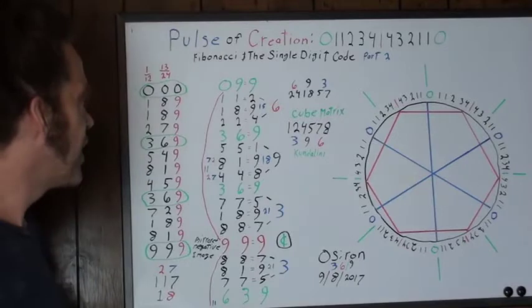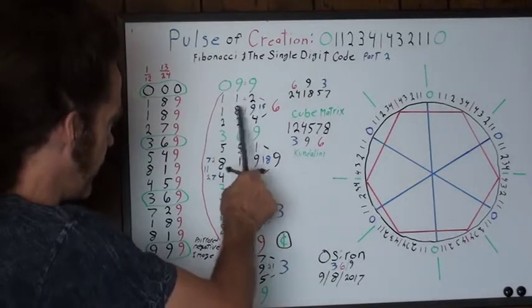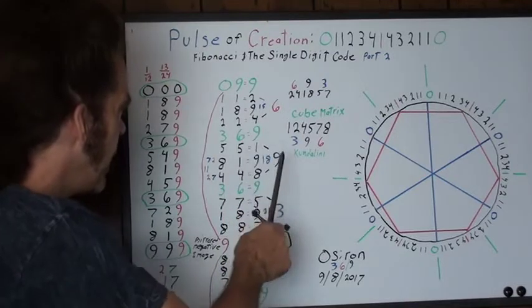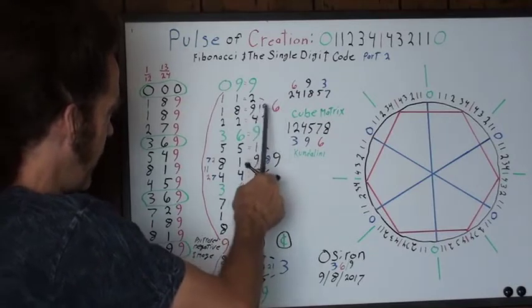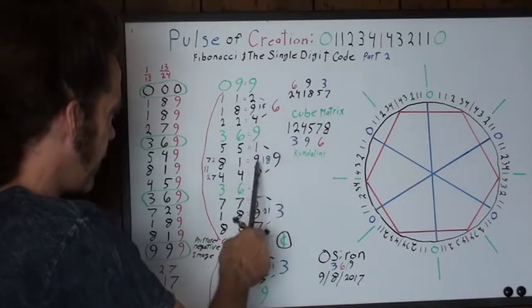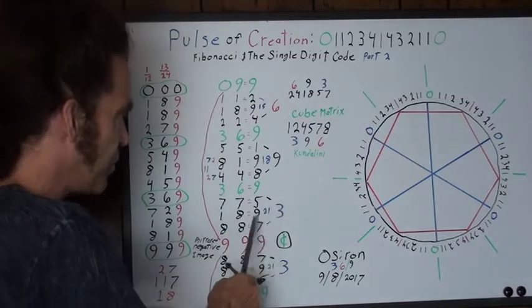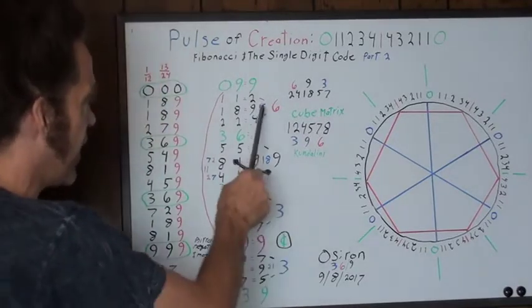But now you're going to notice in each number group, in each number group between the Kundalini grid, it has three numbers. In those form, four and two become six, one and eight become nine, and five and seven become three. But if you add that nine that's in between those, it reveals the tarot card.